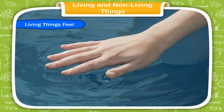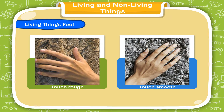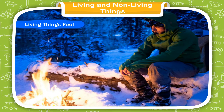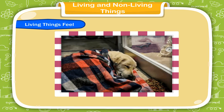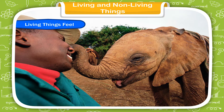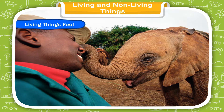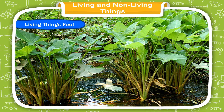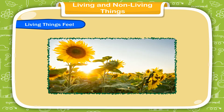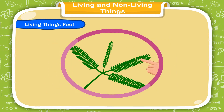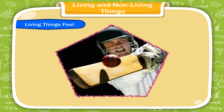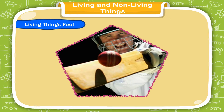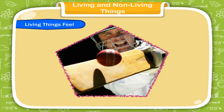Living things feel. When you touch anything, you feel whether the thing is rough or smooth, hard or soft, or hot or cold. Like us, animals can also feel cold, heat or pain. They can also feel danger and search for their food with the help of their sense organs. Plants can also feel — they do not have sense organs, but they can feel the changes around them. Sunflowers turn towards the sun, and the leaves of the touch-me-not plant close immediately when touched. Non-living things do not feel anything.